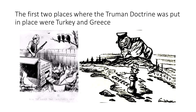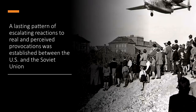The Marshall Plan, created by Secretary of State George C. Marshall, was an aid package of economic and food aid designed to rebuild Europe, implemented after the Soviet Union supported a coup d'état in Czechoslovakia. A lasting pattern of escalating reactions to real and perceived provocation was established between the U.S. and the Soviet Union.